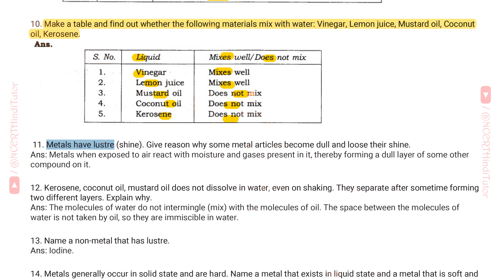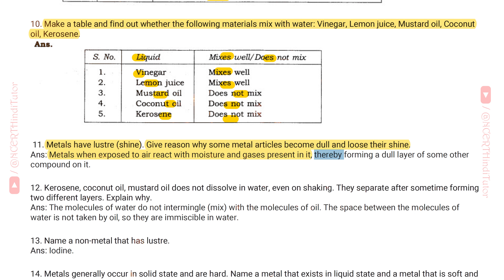Question 11: Metals have lustre and shine. Give reason why some metal articles become dull and lose their shine. Answer: Metals, when exposed to air, react with moisture and gases present in it, thereby forming a dull layer of some other compound on it. Question 12: Kerosene, coconut oil, and mustard oil do not dissolve with water even on shaking.